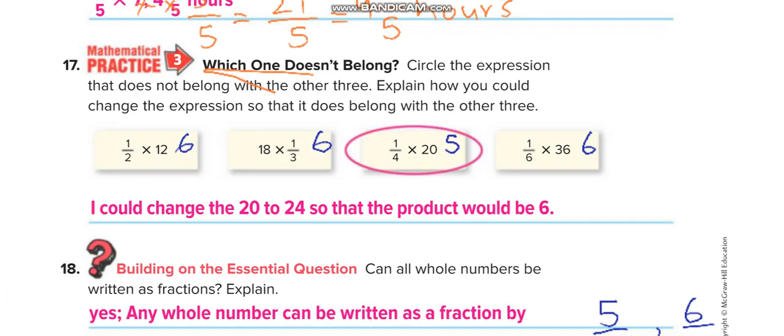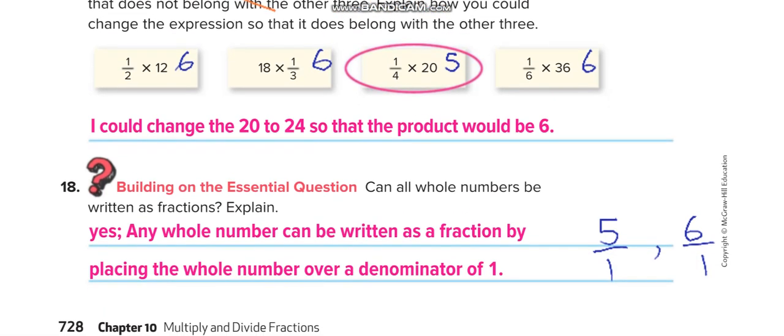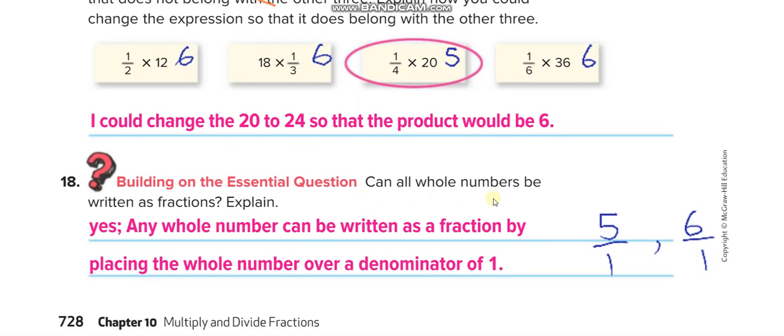Which one is different here from these four, and how to make it similar to others? So if you solve all of them, you will get 6, 6, and 6 here. But here you will get 5. And if you change this 20 into 24, it will become also 6. Can all whole numbers be written as fractions? Yes. If it is 5, 5 over 1. 6, 6 over 1. 7, 7 over 1. You can write any whole number as a fraction by writing 1 in the denominator.